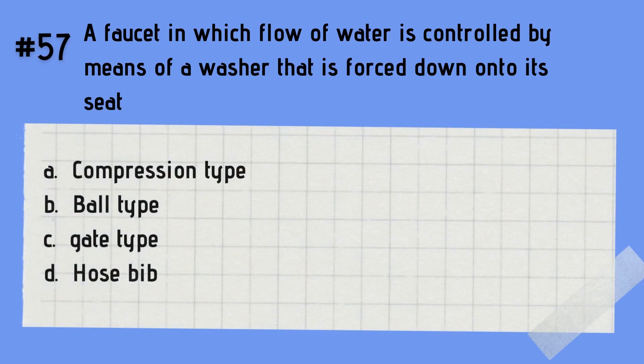Question 57: What do you call a faucet in which the flow of water is controlled by means of a washer that is forced onto its seat? A. Compression type. B. Ball type. C. Gate type. D. Hose bib. The answer is A — compression type. A compression type faucet is one in which the flow of water is controlled by means of a washer that is forced down onto its seat.